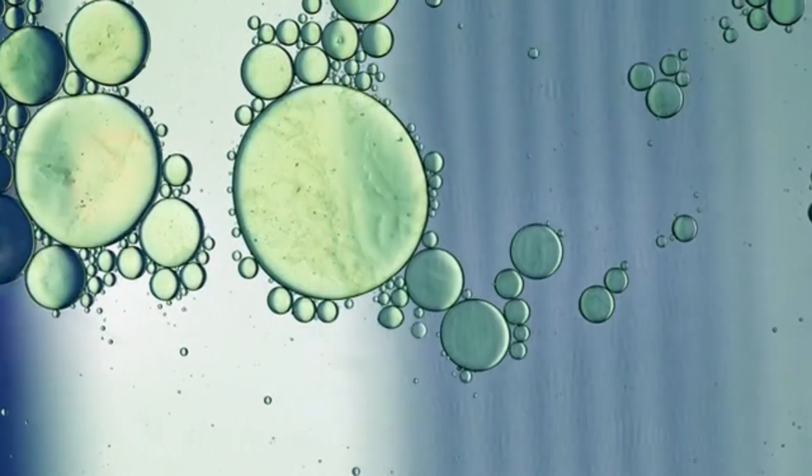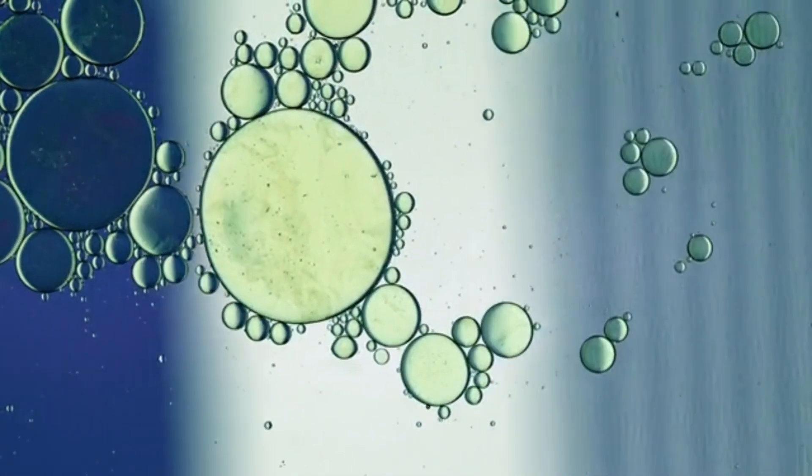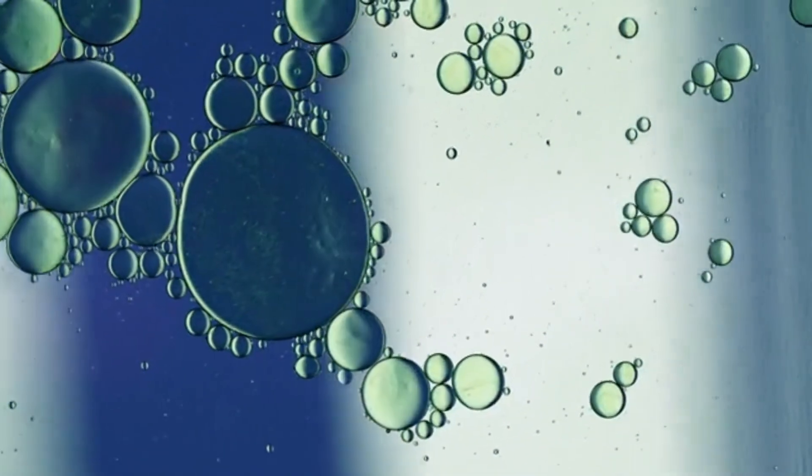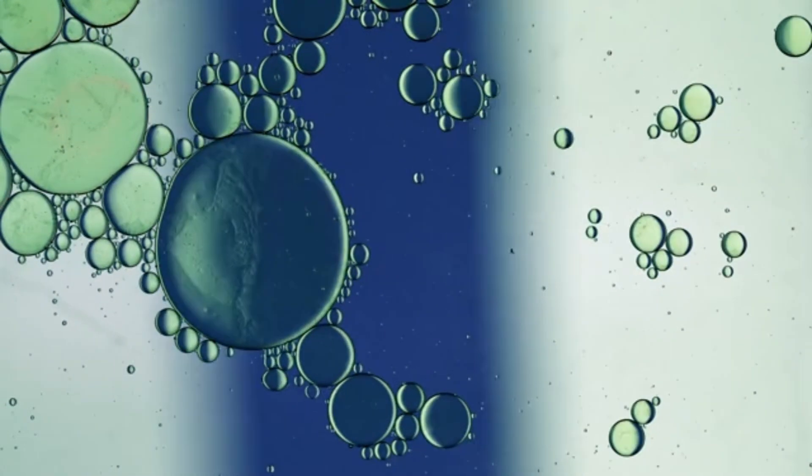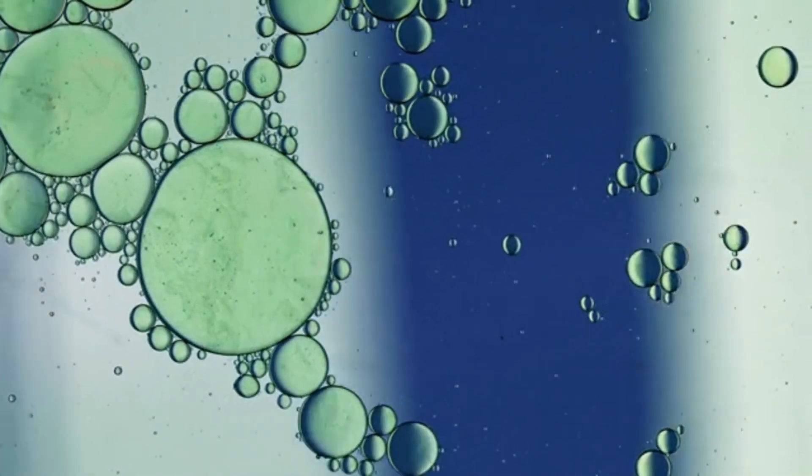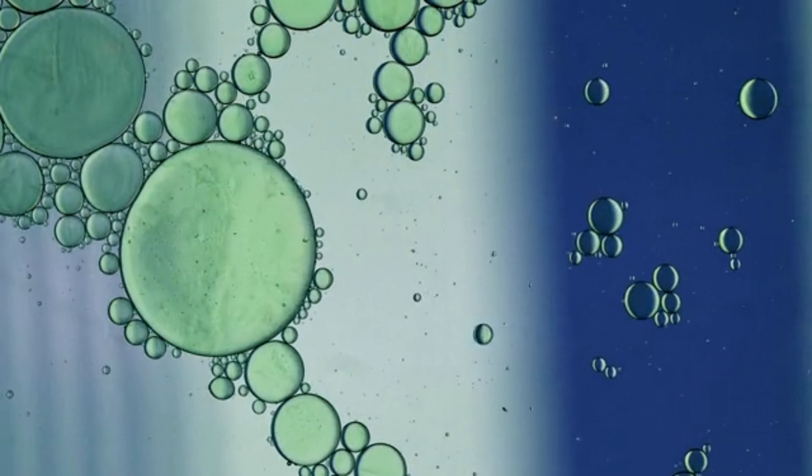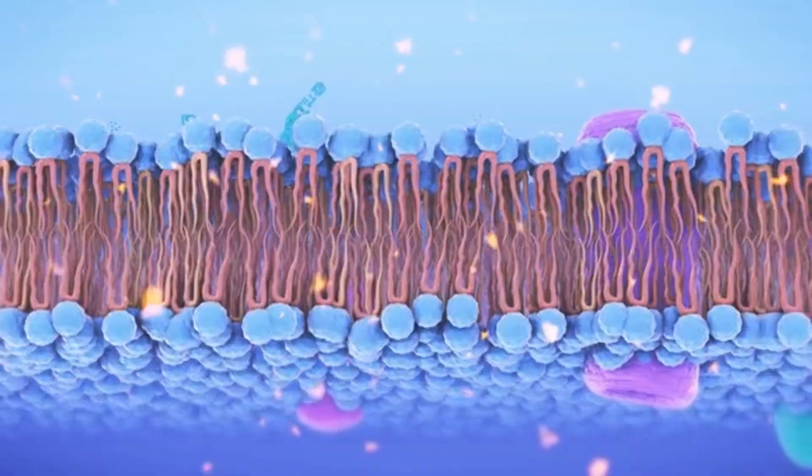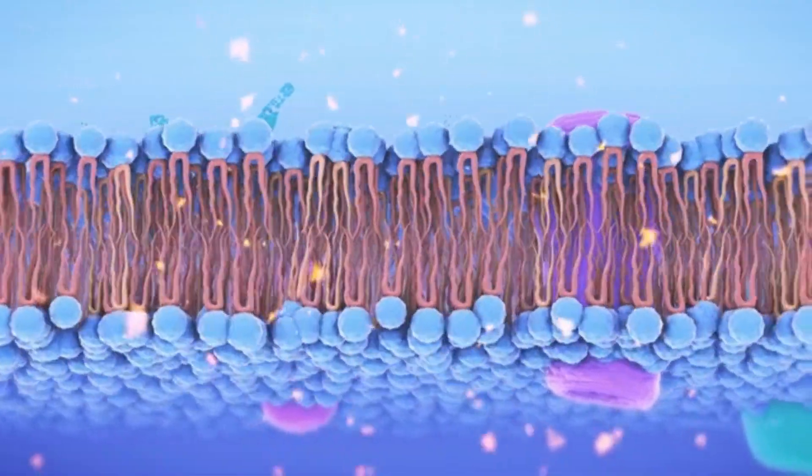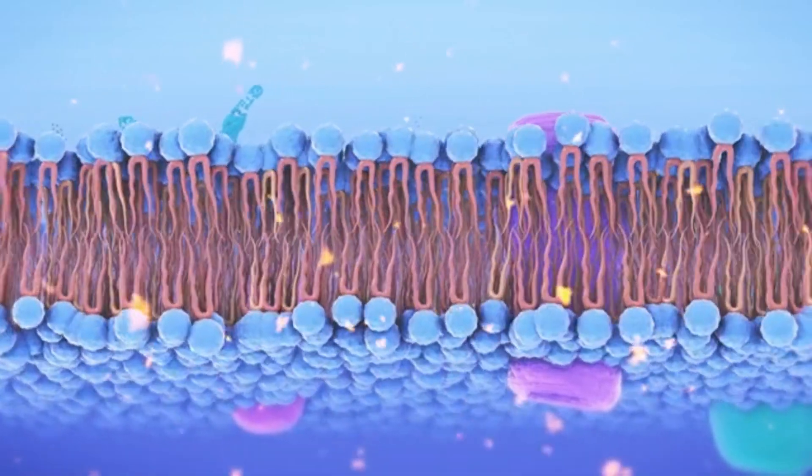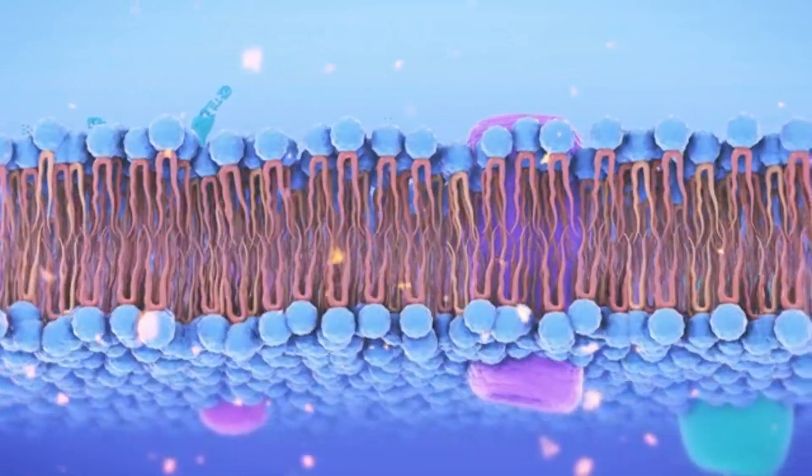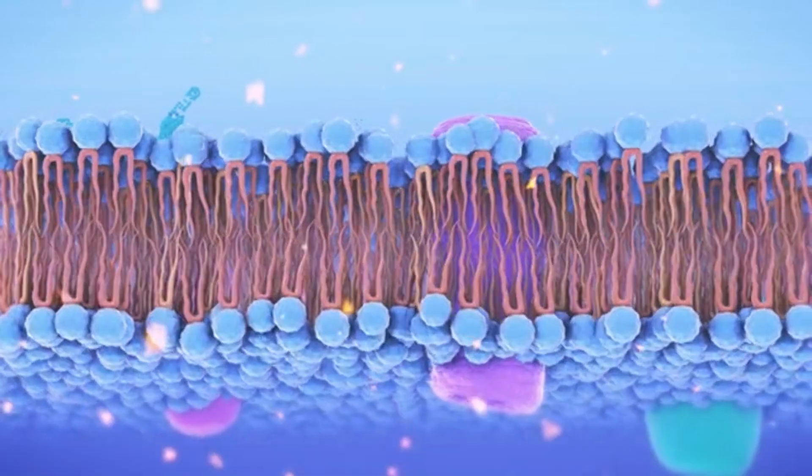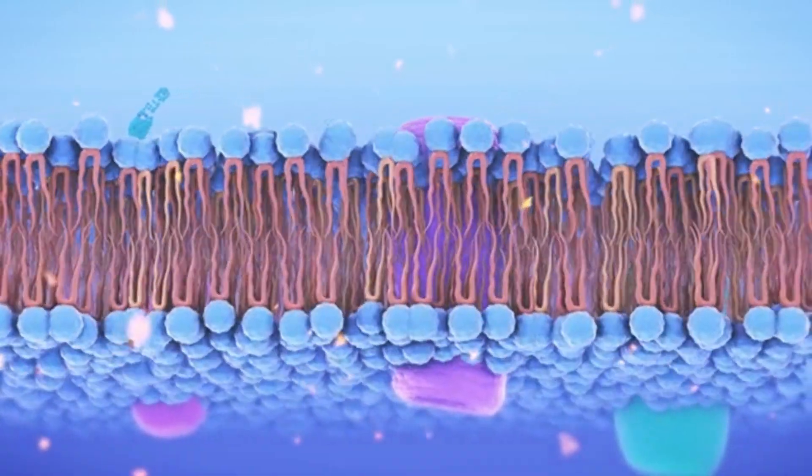Biosorption, on the other hand, involves the passive binding of metal ions to microbial cell surfaces, typically the cell walls, which are rich in functional groups like carboxyl, hydroxyl, and phosphate. Fungi, in particular, excel at biosorption. Their chitin-rich cell walls act like sponges, trapping rare earth elements from dilute solutions.